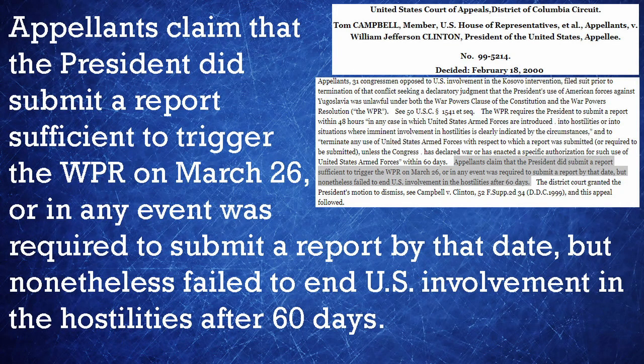On the other side, Congress claimed that the president did submit a report sufficient to trigger the War Powers Resolution on March 26th, but nonetheless failed to end US involvement in the hostilities after 60 days. In Congress's mind, that triggered a 60-day clock, at which point the presidency would have to get permission to continue the war. Congress, you're like a bad parent — just be back within 60 days and we'll be good. If Trump's taught us anything, it takes a lot less than 60 days to trigger a war that Congress would probably be obliged to keep fighting.